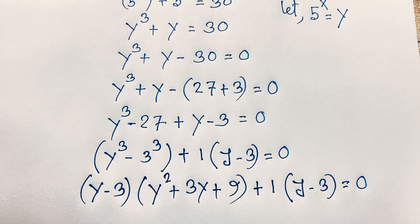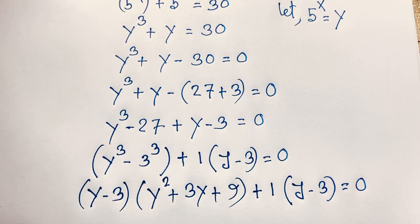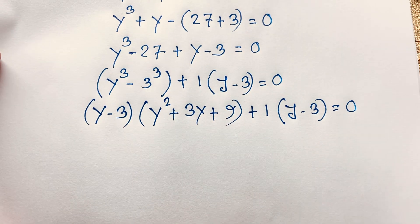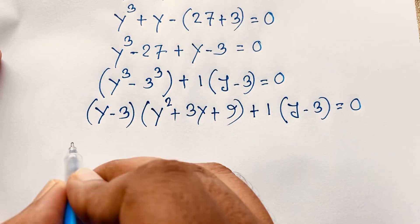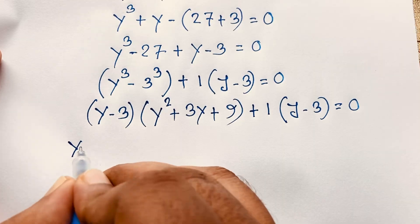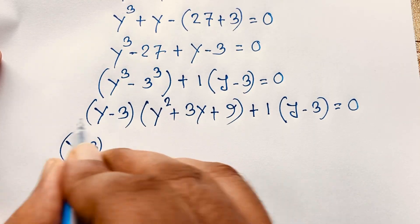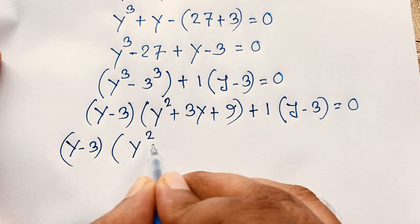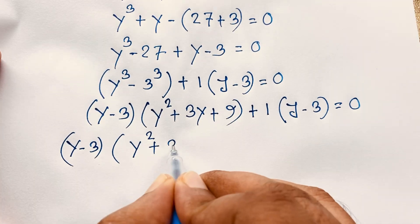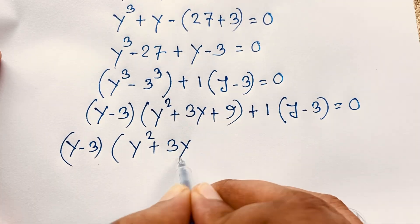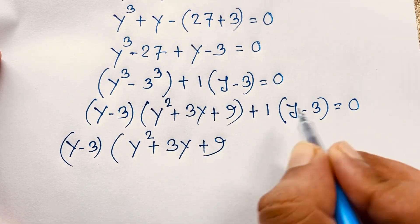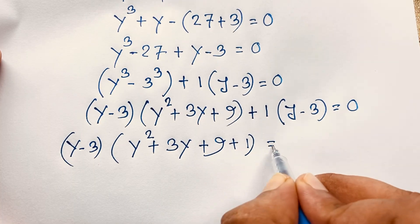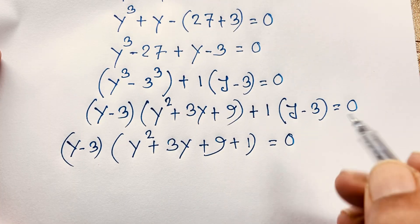Now applying the difference of cubes formula: a³ − b³ = (a − b)(a² + ab + b²). So 3² will be 9, and we get (y − 3)(y² + 3y + 9) plus 1 times (y − 3) equal to 0. Factoring out (y − 3), we get (y − 3) times (y² + 3y + 9 + 1) equals 0, which is (y − 3)(y² + 3y + 10) = 0.